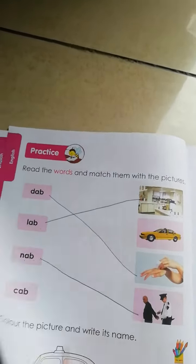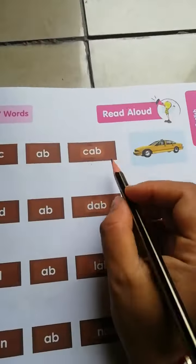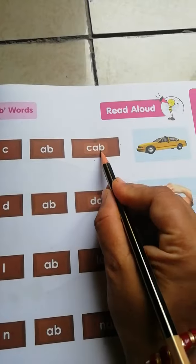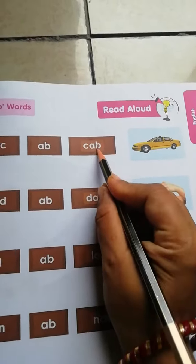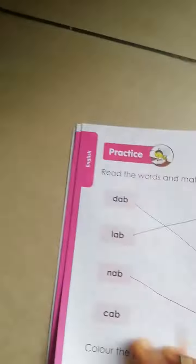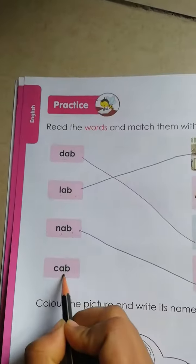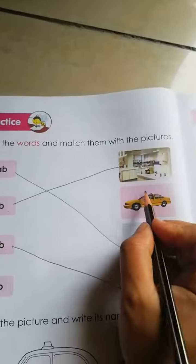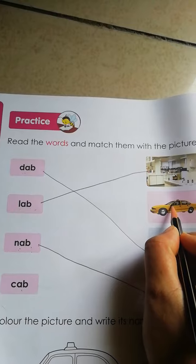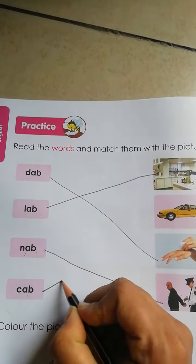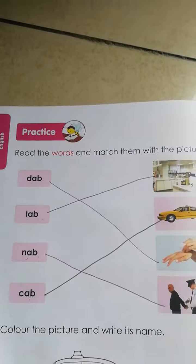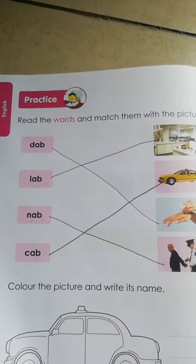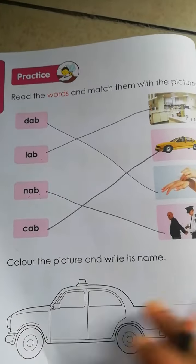Now, cab. Cab. Yes. Cab ka picture. Yes. Now see, cab. This is cap picture. This is cap. Ok, you have to join like this.